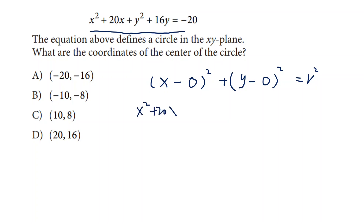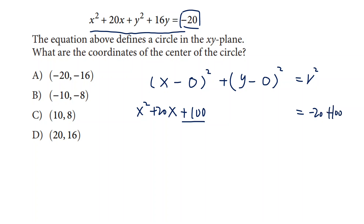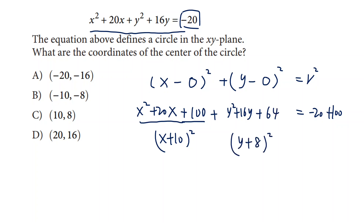We take x squared plus 20x out and consider what number to add to make it a perfect square. We should add 20 divided by 2, squared, which is 100. So we add 100. Because we add 100 on the left side, we add 100 on the other side as well. This changes into x plus 10 squared. Then we do the same with y. For y, it's y squared plus 16y, so we add 64 to make it a perfect square, and add 64 on the other side of the equation.